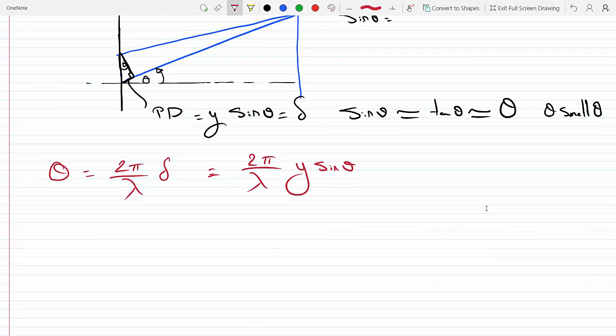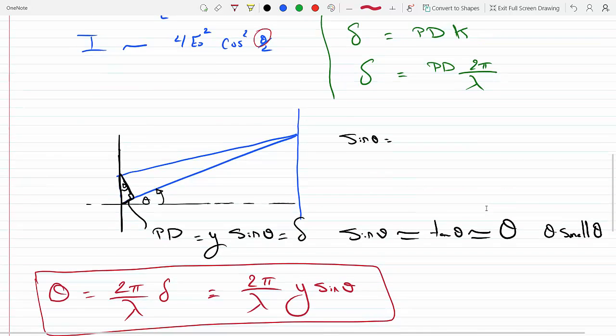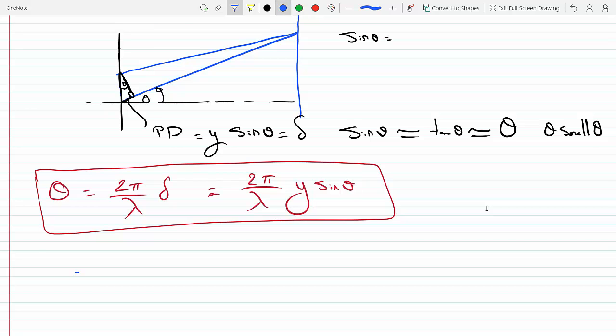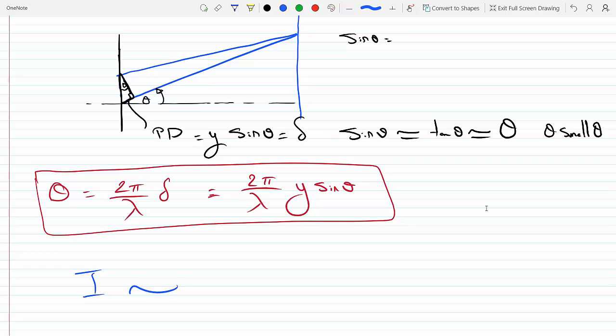And now we can replace this theta here with this theta, and it should do the trick. So I will now be proportional to 4E0 squared cosine squared theta over two. So I would cancel the two and I would get pi over lambda y sine theta. And this is the equation we're trying to get to.